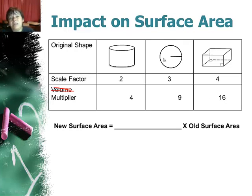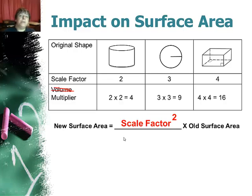I could have taken a shortcut and calculated the effect by just going 2 times 2 is 4, 3 times 3 is 9, and 4 times 4 is 16. So the shortcut is to just do the scale factor squared, or scale factor times scale factor, and multiply that by your old surface area to get your new surface area.